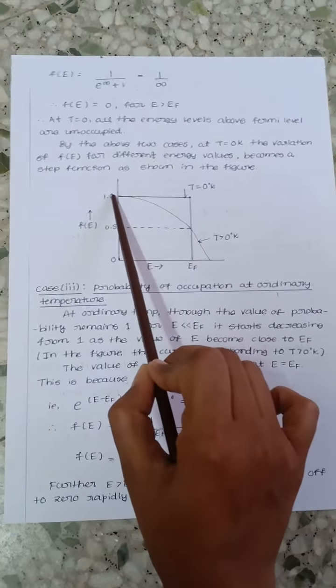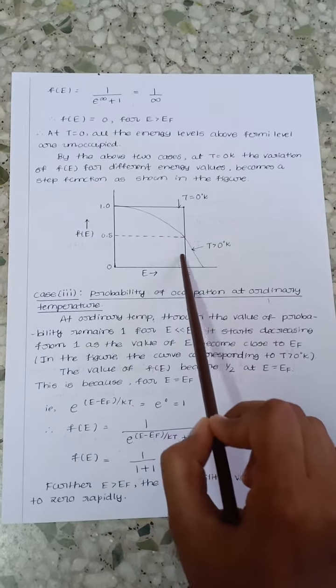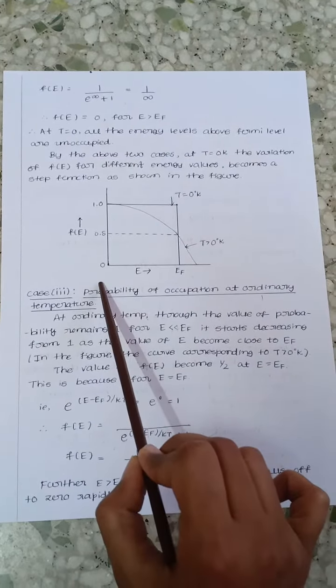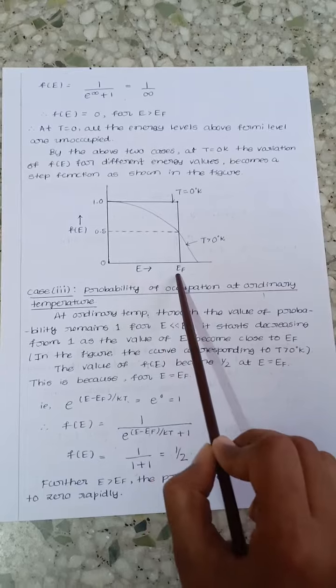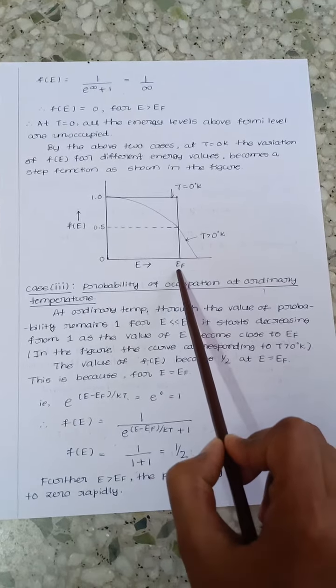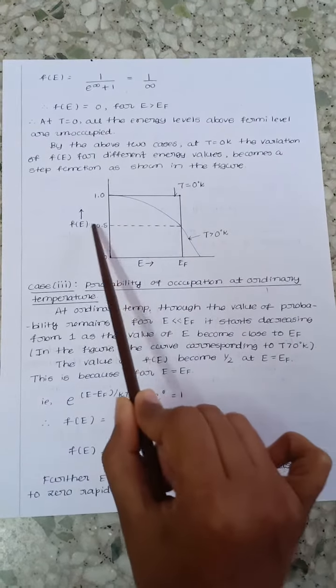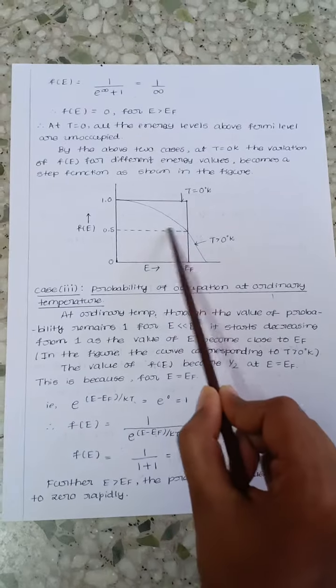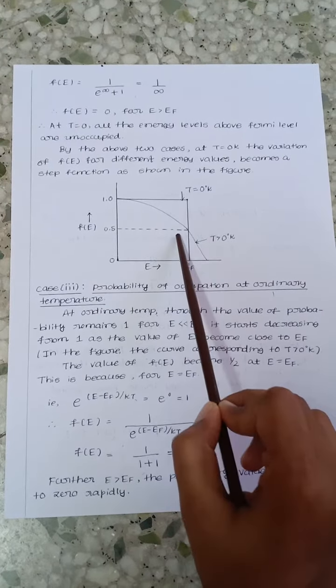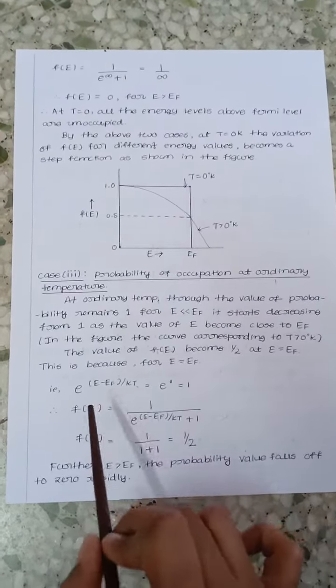It starts to decrease from 1 as the value E becomes closer to EF. That means the value of F of E becomes half when E equals EF.